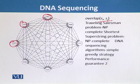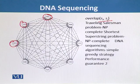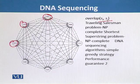This reduction does not lead to an efficient algorithm since the Traveling Salesman Problem is NP-complete. Moreover, the shortest superstring problem is itself NP-complete, so a polynomial algorithm is unlikely. Early DNA sequence assembly algorithms used a simple greedy strategy instead.